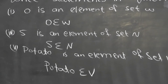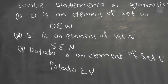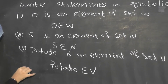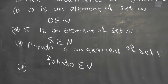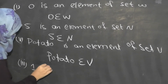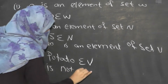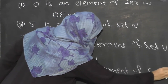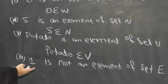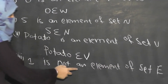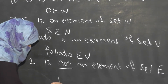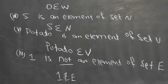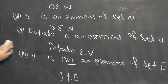Now let's do a question about 'doesn't belong to the set,' where one element does not belong to the set. Question number 4, part 3: '1 is not an element of the set E.' So you write: 1 doesn't belong to set E. This crossed-out 'belongs' sign means 'does not belong.'